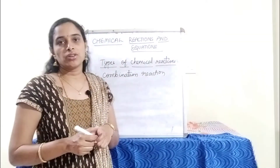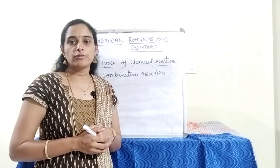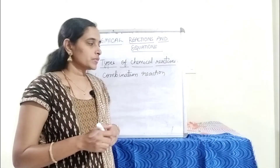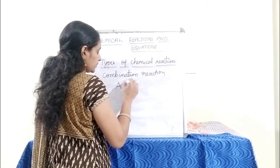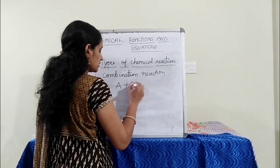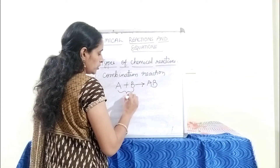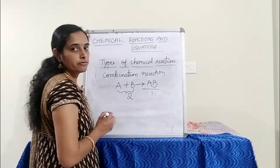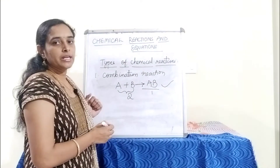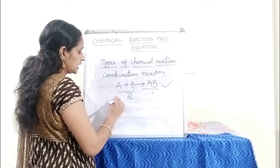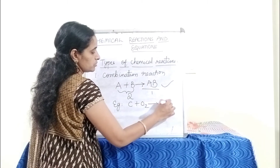The first type is combination reaction. It is a reaction in which two or more reactants combine to form a single product. The general form is A + B → AB — two reactants combine to form only one product. An example is C + O2 → CO2.